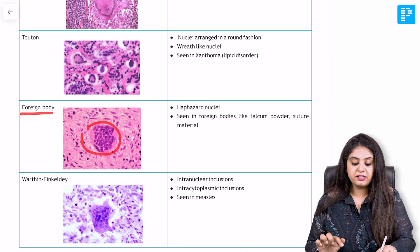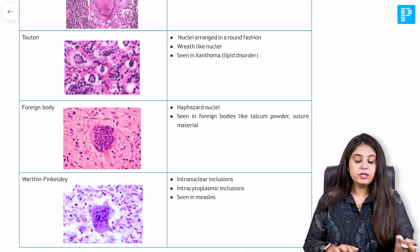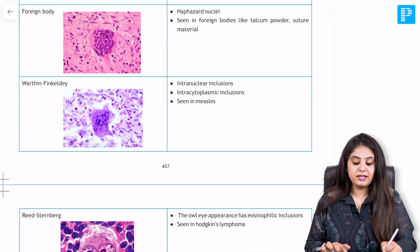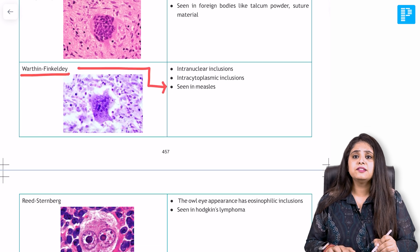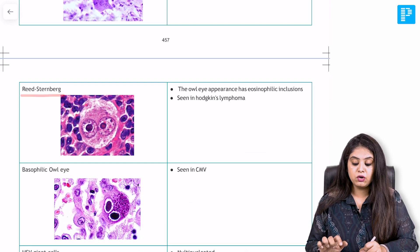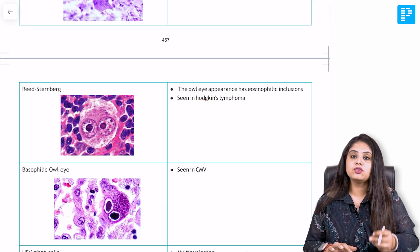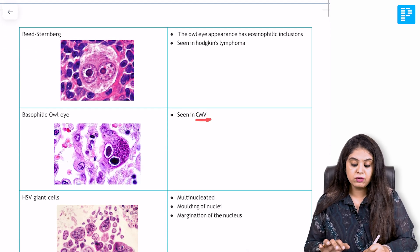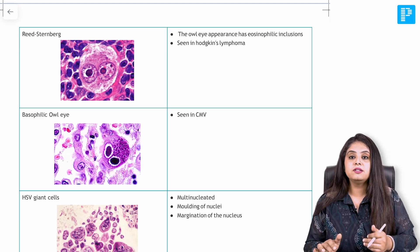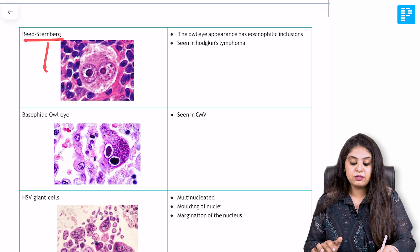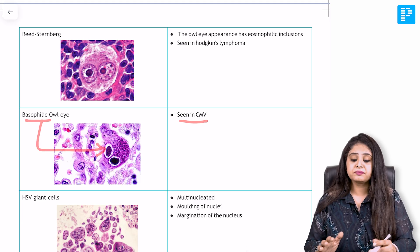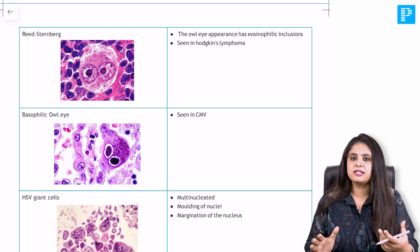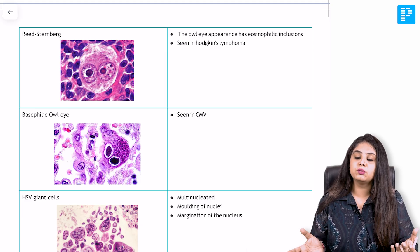Then, of course, the famous foreign body giant cell with haphazard nuclei. We can't forget the path-micro integration — the Warthin-Finkeldey giant cells seen in measles. For the Reed-Sternberg giant cell seen in Hodgkin's lymphoma, which shows the classical owl-eye appearance, there's also an image of cytomegalovirus showing owl-eye appearance, with a note that Reed-Sternberg cells show pink color inclusions and CMV shows blue color inclusions. This is all in tabular format, much of which was in previous notes as well.